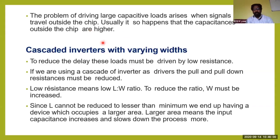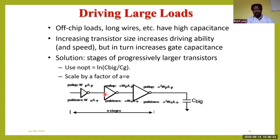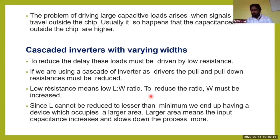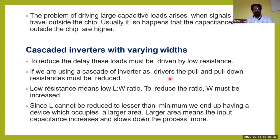Overcoming this problem can be done by cascading the inverters — this is called the cascading method. By connecting inverters in series in a cascading manner, we can overcome large capacitance loads. In order to reduce the delay, these loads must be driven by low-resistance devices. Low resistance means the width of the transistor has to be large.